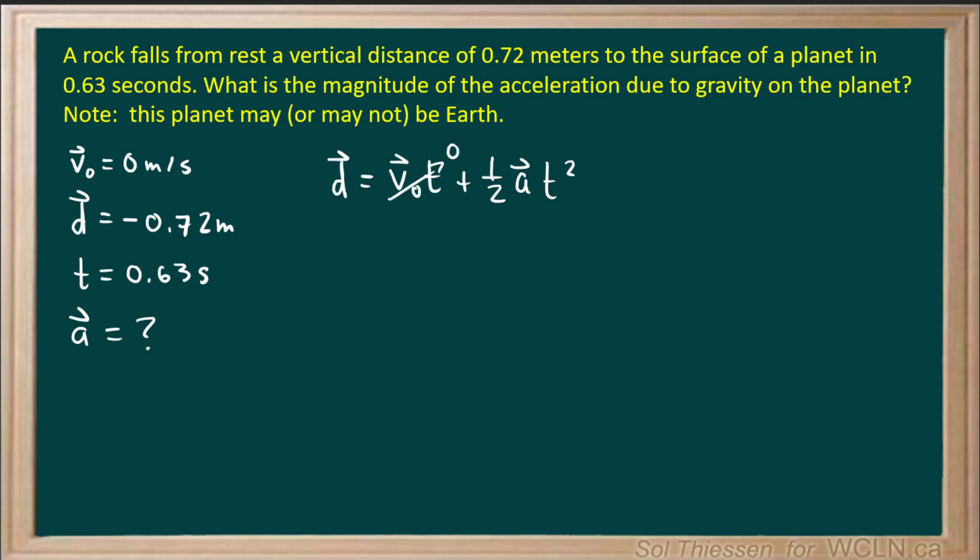The initial velocity is 0, so we'll have displacement equals one-half acceleration times time squared. Multiply both sides by 2 over time squared to get acceleration on its own. So we'll have 2 times displacement over time squared equals acceleration.